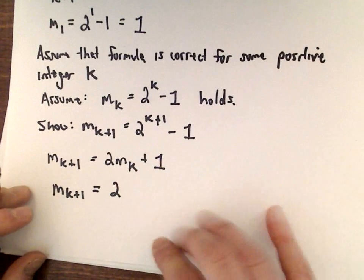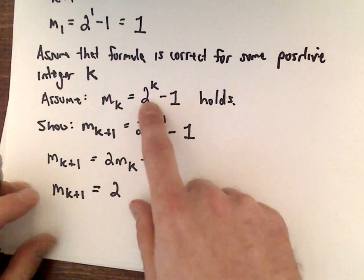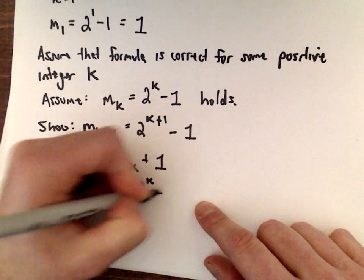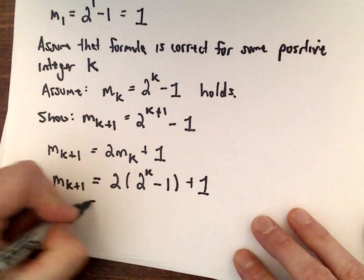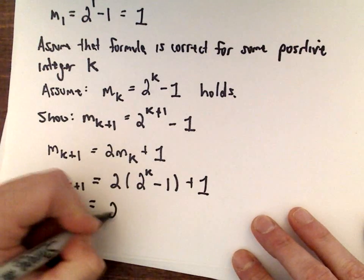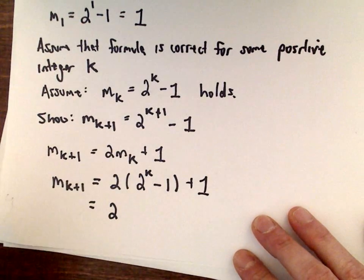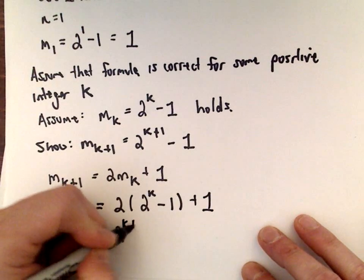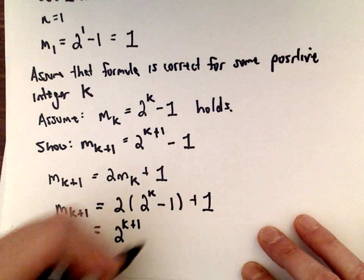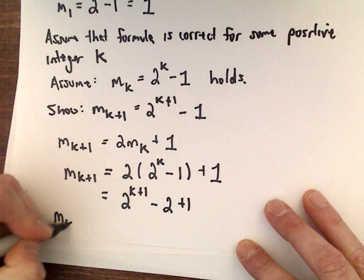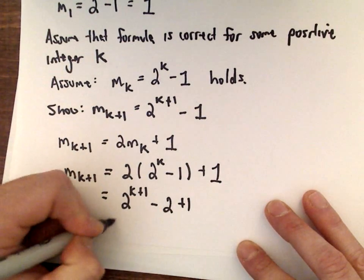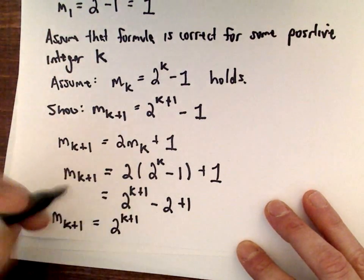We know by assumption that m sub k should equal 2 to the k minus 1. If we simplify this, if we distribute, we'll have 2 multiplied by 2 to the k, which is 2 to the k plus 1. If we distribute, we'll have negative 2 plus 1, and that gives us m sub k plus 1 equals 2 to the k plus 1 minus 1.